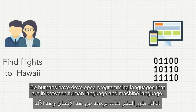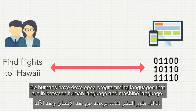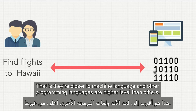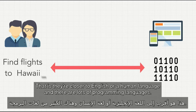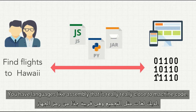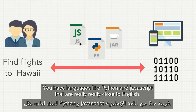So humans have developed programming languages that are in between human language and machine language — that is, 0s and 1s. Some programming languages are lower level than others, meaning they're closer to machine language. Other programming languages are higher level, meaning they're closer to English or a human language. And there are lots of programming languages.